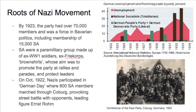By 1923, the party had over 70,000 members and was really a force in Bavarian politics. We get the creation of a group called the SA — also called the Brown Shirts — similar to the Freikorps. Their aim was to promote the party at rallies, protect their leaders, and they did this in violent ways: beating people, yelling, screaming, involved in thuggish behaviour on the streets. In October 1922, the Nazi Party participated in German Day, where SA members marched through Coburg, provoking a street battle with opponents, led by Ernst Röhm.